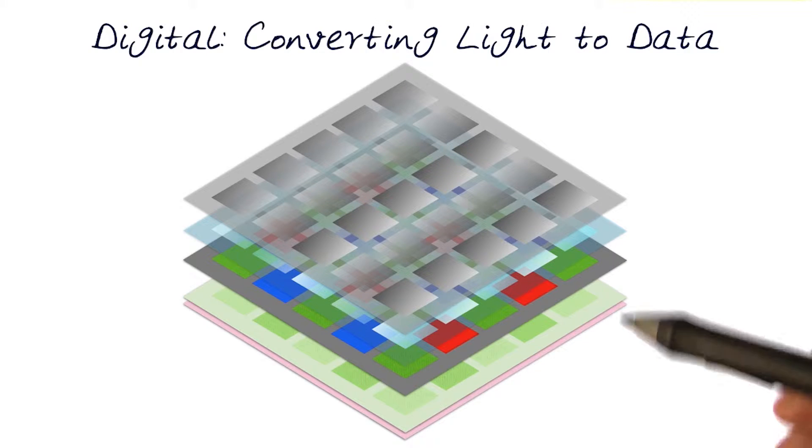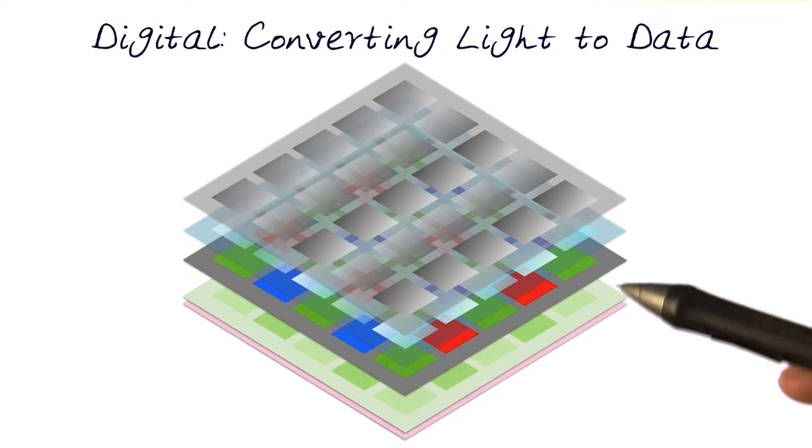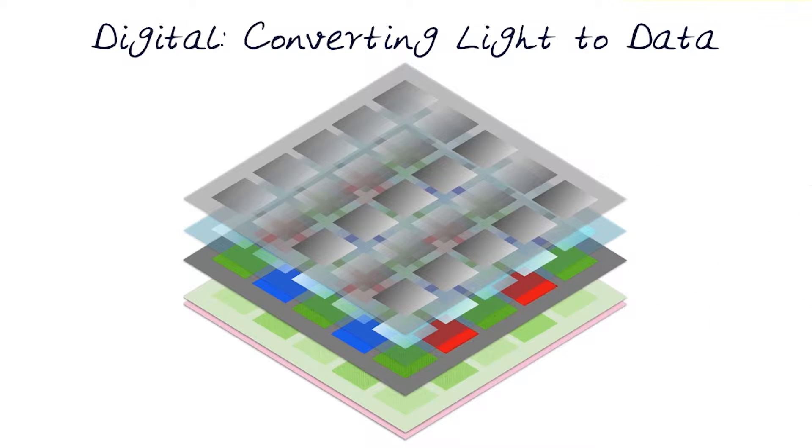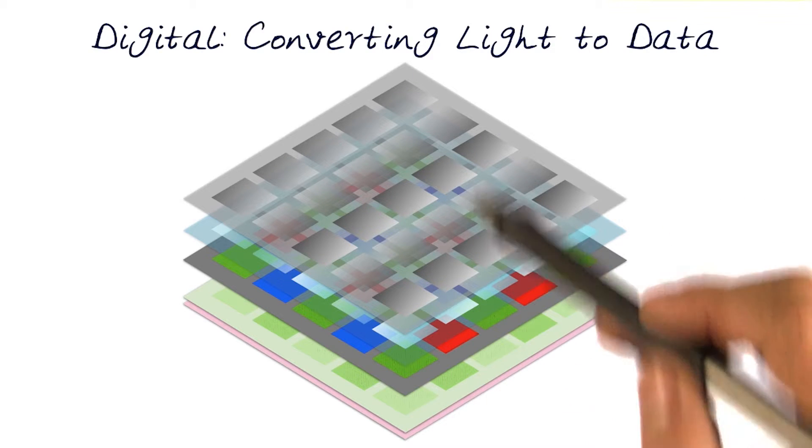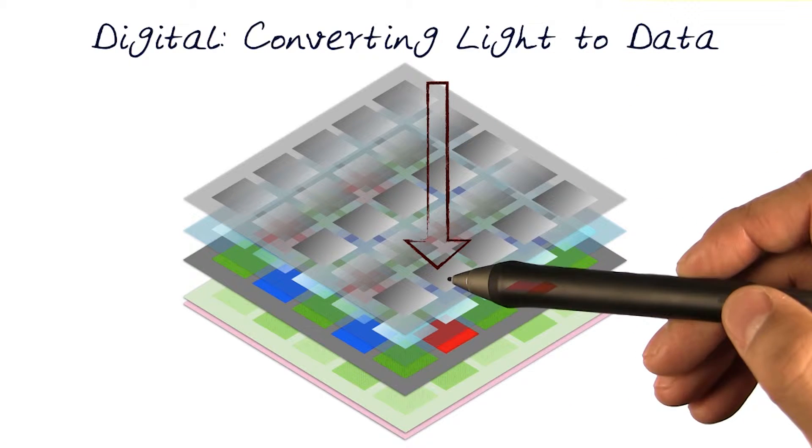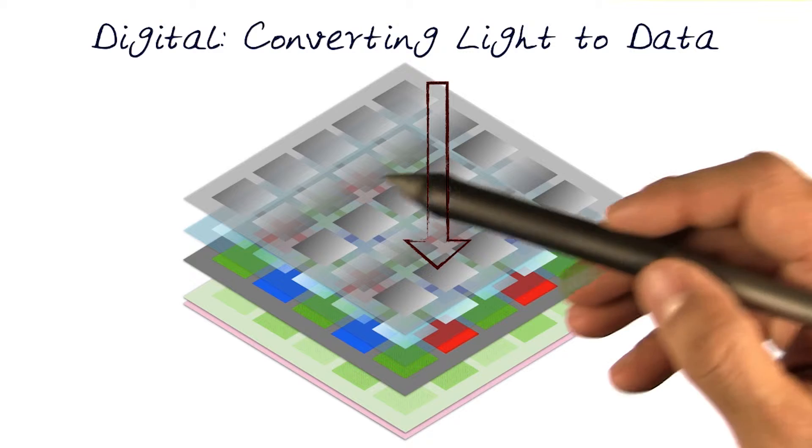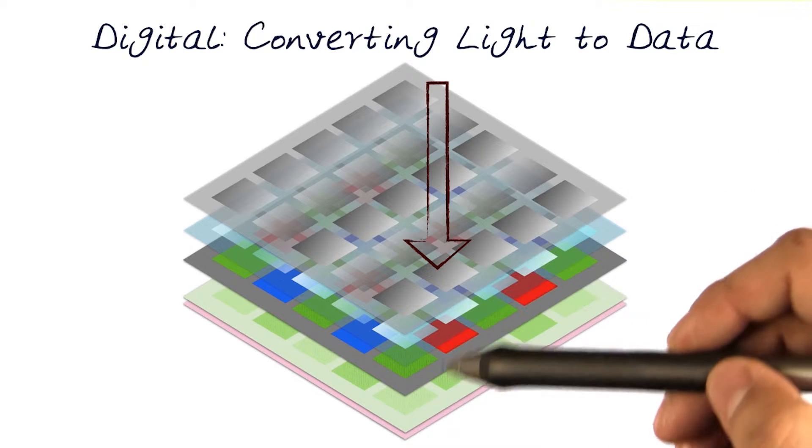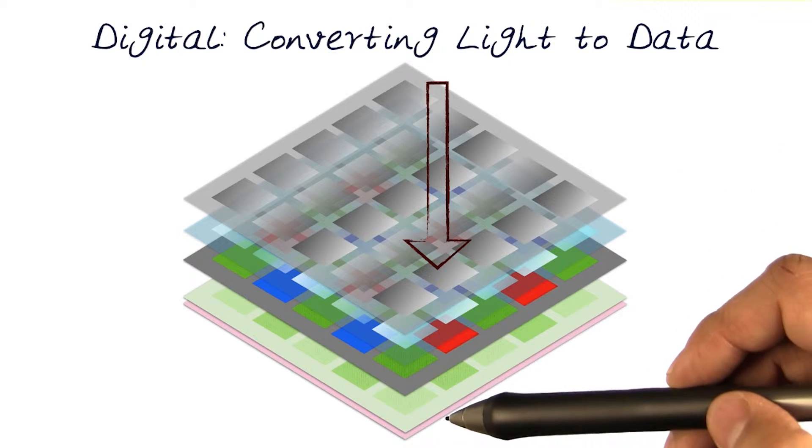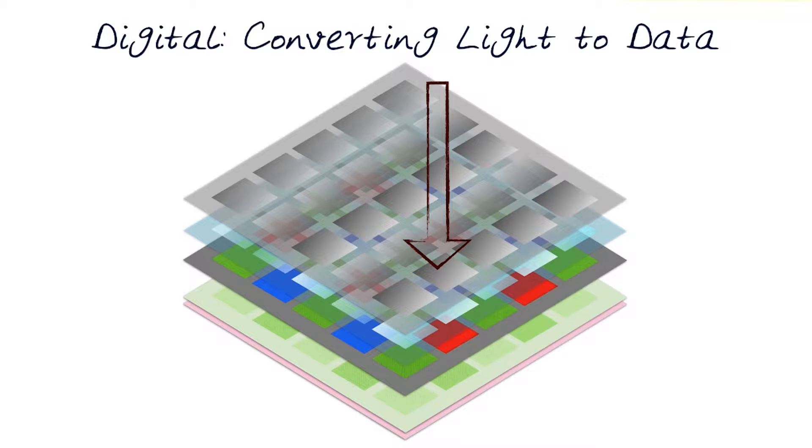We are going to peel this back out as an onion and look at each one of them separately. The point is light is coming down this way and hitting a variety of layers, and then it hits the bottom layer where the current is stored. Let's again look at this by peeling the onion layer by layer.